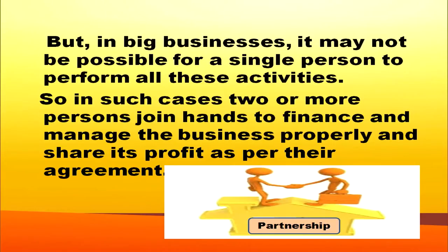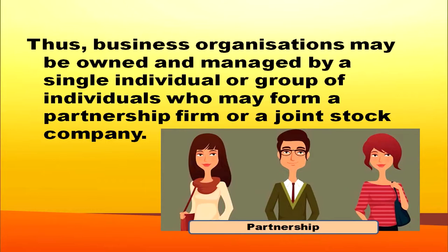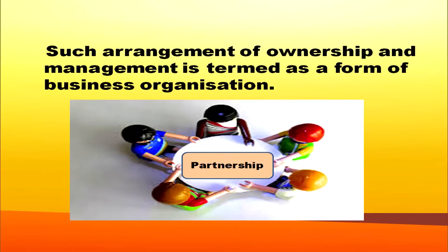In big business, it may not be possible for a single person to perform all these activities. In such cases, two or more persons join hands, bring their money and manage the business properly. After managing the business, they will get profit and that will be shared as per the agreement. Thus, business organization may be owned and managed by a single individual or group of individuals. If it is a single individual owned business, it is called sole proprietorship; if formed by a group, it can be partnership or joint stock company. Such arrangement of ownership and management is termed as forms of business organization.